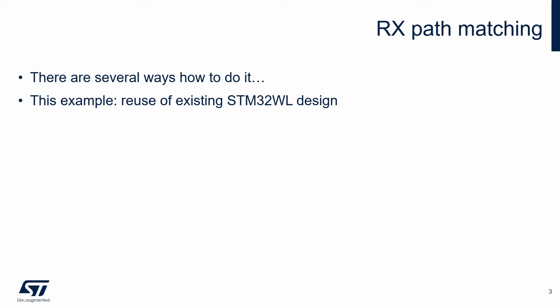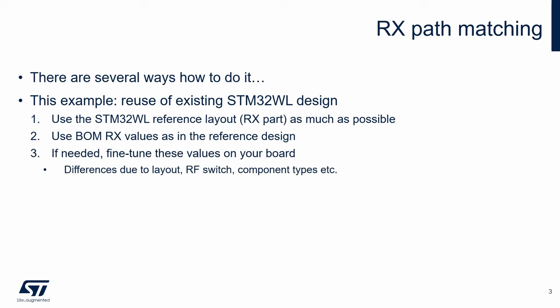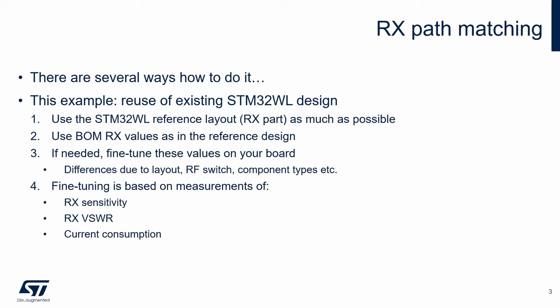The main steps of this method are: using the reference layout of the receiver section as much as possible, and using receiver component values as in the reference design. The component values can be fine-tuned if needed. Fine-tuning may be needed due to differences in the layout, RF switch, component types, etc. Fine-tuning is based on measurement of receiver sensitivity, receiver standing wave ratio, and current consumption. These points are described in more detail in the following slides.